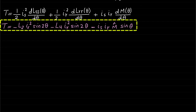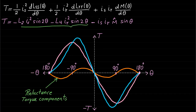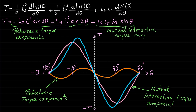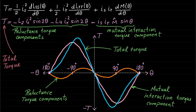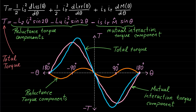These torque expression components can be plotted as shown. The orange waveform represents the sum of the stator and rotor reluctance torque components. The pink waveform represents the mutual interaction torque component. The blue torque waveform represents the total torque, which is the sum of the reluctance and mutual torque components. Note that the mutual interaction torque component is always greater than the reluctance torque. There is no doubt that this total generated torque will cause some movement; however, the movement is not continuous rotational movement.